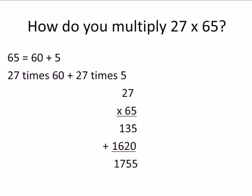So 65 equals 60 plus 5, and our problem is 27 times 60 plus 27 times 5. I'm going to add those answers together — we multiply the top number by 5, and we multiply the top number by 60, and then we add them together. And there's our answer: 1,755. You're going to be learning this again, so you don't need to know all this perfectly right now. We're going to try some easier problems today on your worksheet.